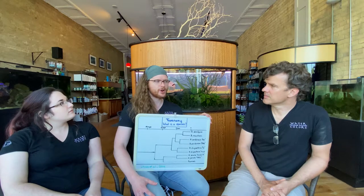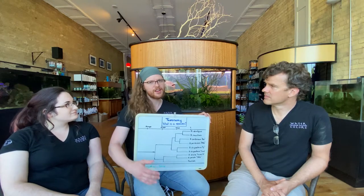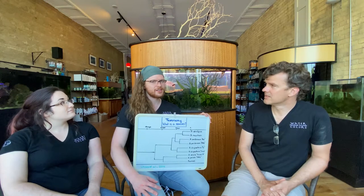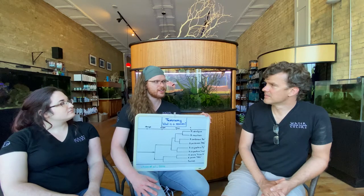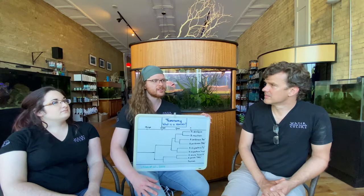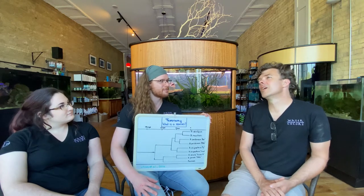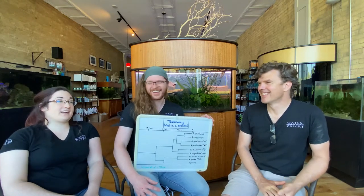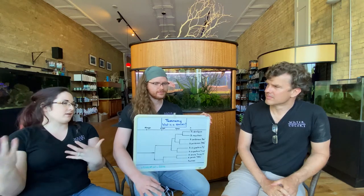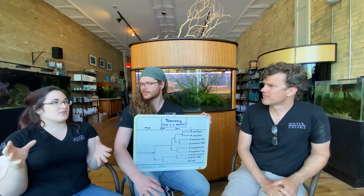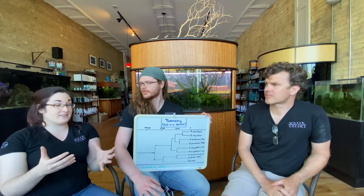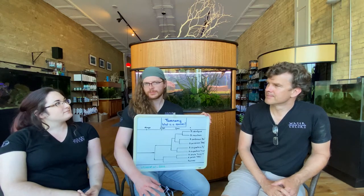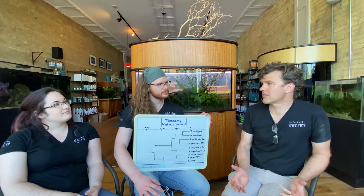For breeders, provenance is going to become more and more important as we understand relationships better. I have a pair of Tateurndina ocellicauda — collection location: Sangatta. That collection location is very important because Tateurndina genetics are being better understood, and what is now ocellicauda could be renamed next year, but they'll still be collected from Sangatta. As long as I have that information, the taxonomy can change and I can backtrack them. The same is true for Apistogramma, Crenicichla, and other species where geographic barriers change the organism — each individual stream can produce a very different Apistogramma.